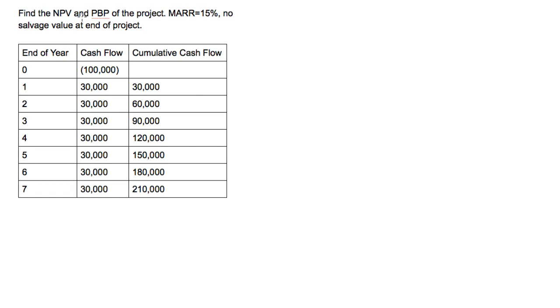Now we want to calculate the net present value and payback period of a project. Let's assume we have a minimum acceptable rate of return of 15% and there's going to be no salvage value at the end of this project. The initial cost is $100,000, we're making $30,000 each year. Let's figure it out.